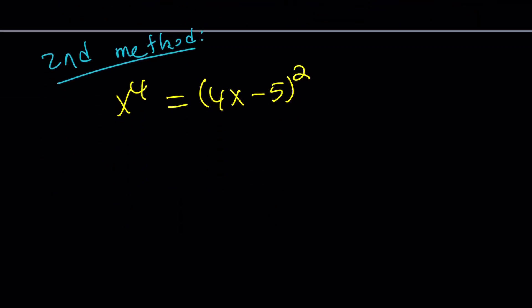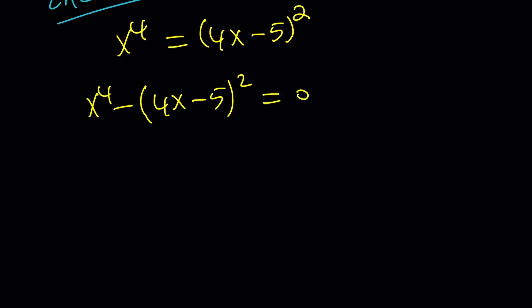So, here's what I'm going to do. I'm going to square root both sides, and then that's going to give me a simpler equation. Or, you can do the following. You can subtract this, set it equal to 0, and then, factor this using difference of two squares. This is x squared plus 4x minus 5, and then, x squared minus 4x plus 5. Because, x to the fourth is x squared squared, right?